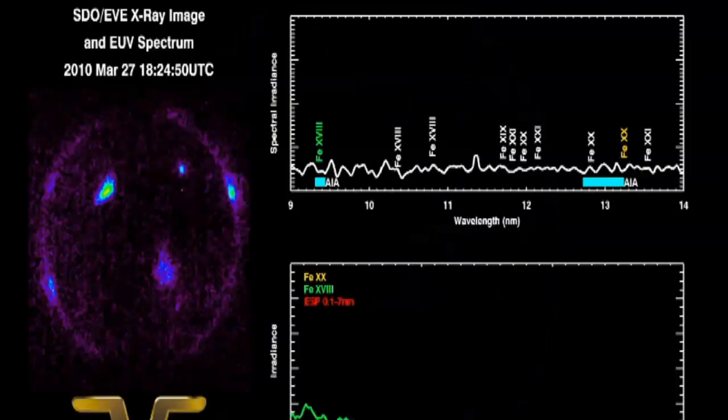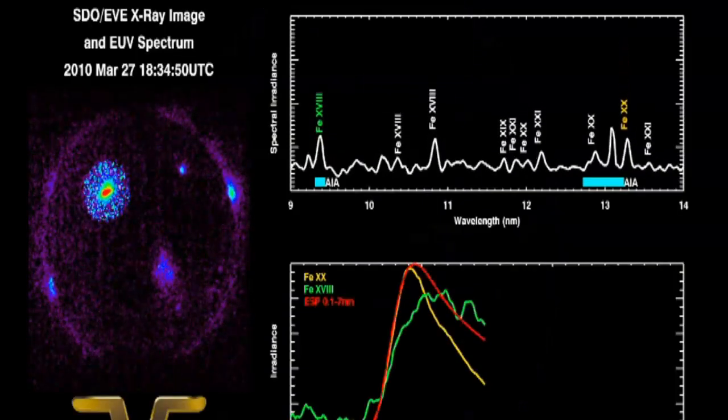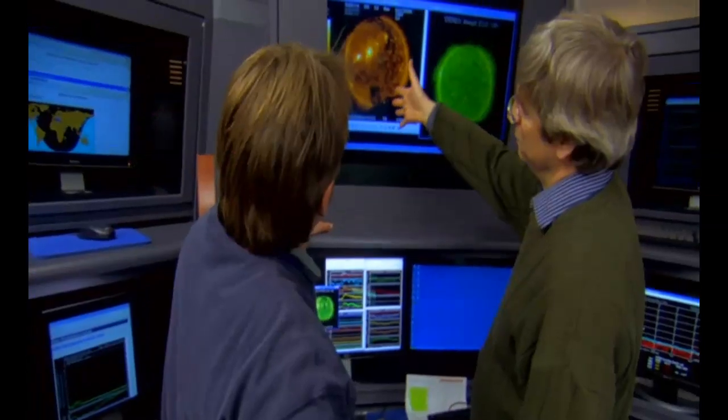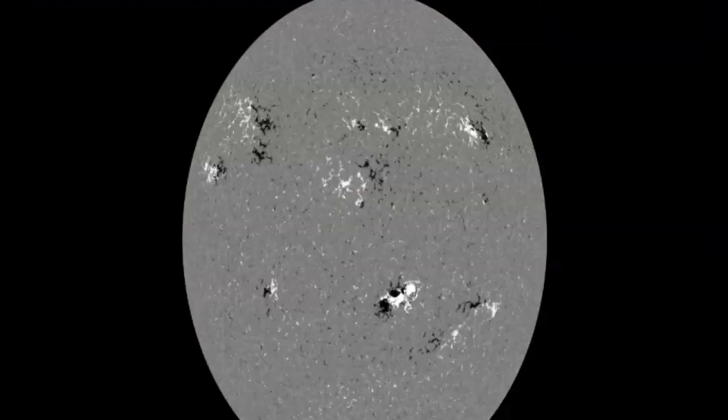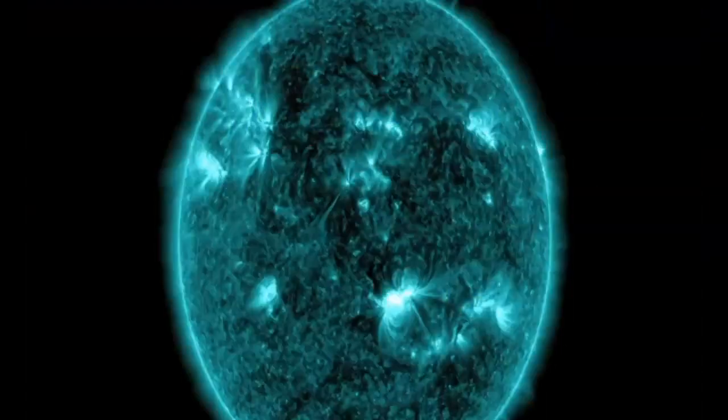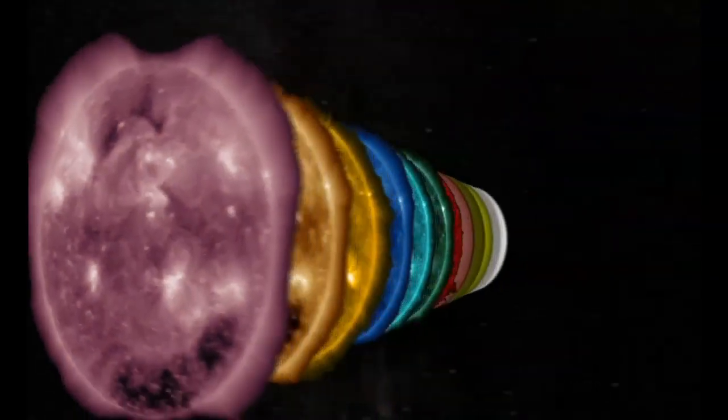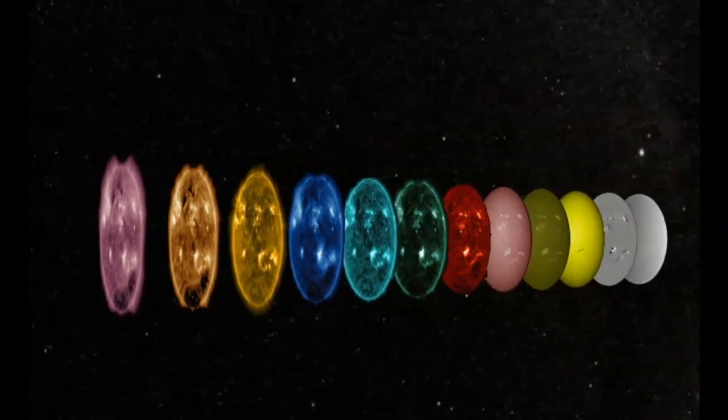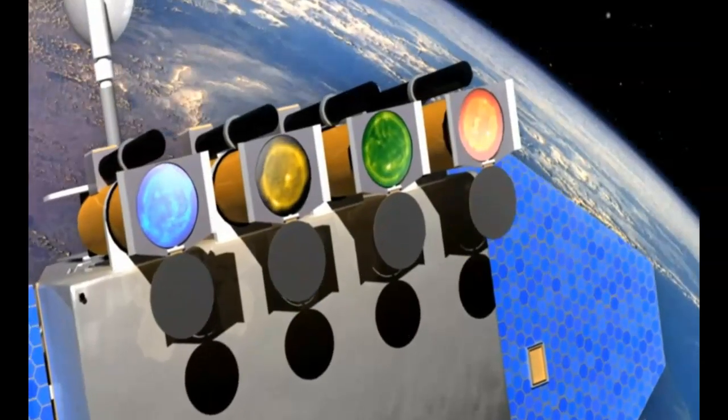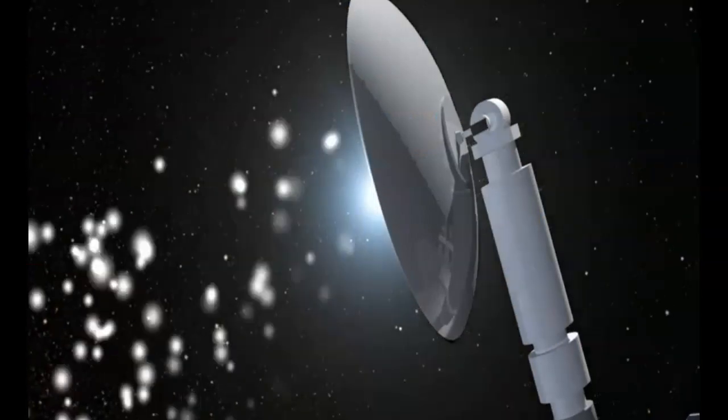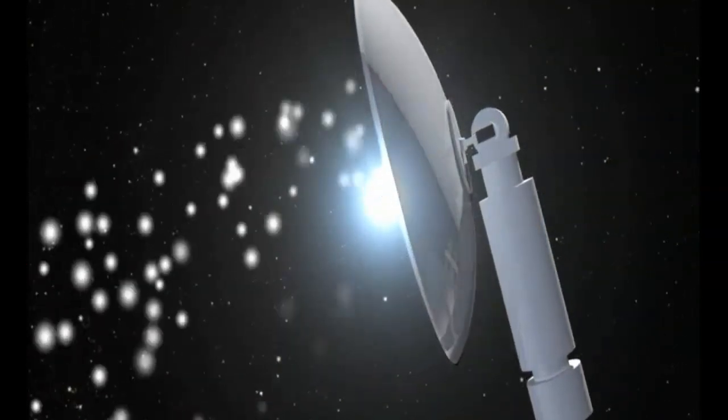The seriousness of an X-class flare pointed at Earth is why NASA and NOAA constantly monitor the sun. NASA's heliophysics fleet of spacecraft can now see the sun from every side and in many different wavelengths. This unprecedented coverage is enabling scientists to predict and detect space weather events like flares and CMEs with ever greater accuracy.